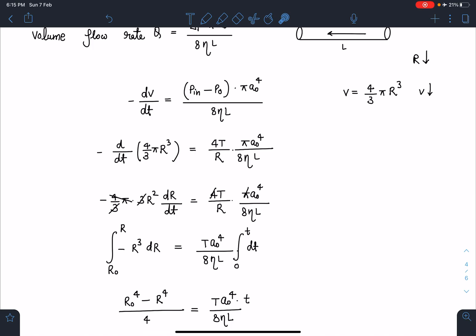This side we are going to get Ta₀⁴/8ηL into dt. When we integrate, initial radius is R₀ when time t was 0, at any time t radius of the soap bubble is R.